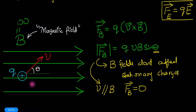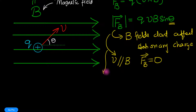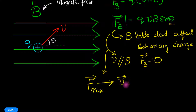Therefore, not only must the charge be moving, but it also has to make an angle with respect to the magnetic field — otherwise there's no force. From this we also understand that the force is maximum when the velocity is perpendicular to the magnetic field.